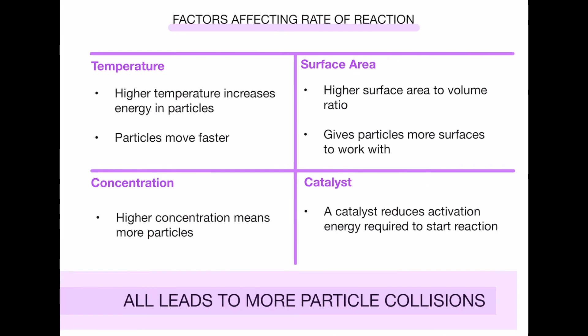Factors affecting the rate of reaction. There are four factors here: temperature, surface area, concentration, and a catalyst. So temperature, simply a higher temperature increases the energy in the particles and therefore the particles move faster and because they move faster those collisions will occur more and they will have more energy so that activation energy will not be a problem before they react.